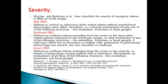Hinninki and McKinney et al. categorized the severity of vasogenic edema in PRES on FLAIR images into mild, moderate, and severe. Mild PRES is cortical or subcortical white matter edema without parenchymal hemorrhage, mass effect, or herniation, or minimal involvement of only one structure such as the cerebellum, brainstem, or basal ganglia. Moderate PRES shows diffuse confluent edema involving cortex to deep white matter without reaching the ventricular margin, or mild involvement of two of those structures, with mild mass effect but no herniation or midline shift.